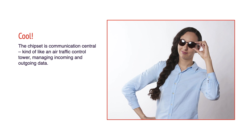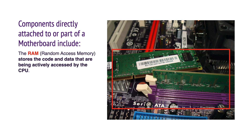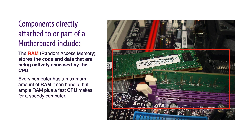The chipset is communication central, kind of like an air traffic control tower managing incoming and outgoing data. Another component of the motherboard is RAM, which stands for random access memory. RAM stores the code and data that are being actively accessed by the CPU. Every computer has a maximum amount of RAM that it can handle, and computers with more RAM are faster.